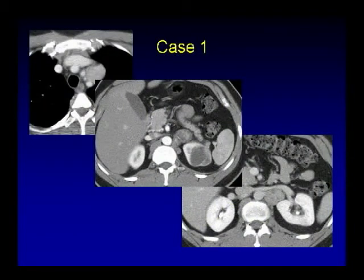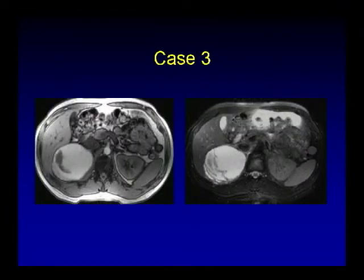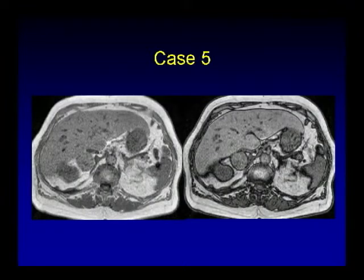First are your five unknown cases: case number one, case number two, number three, number four, and number five. This is a gradient echo in and out of phase, and I want you to focus on the right adrenal gland.